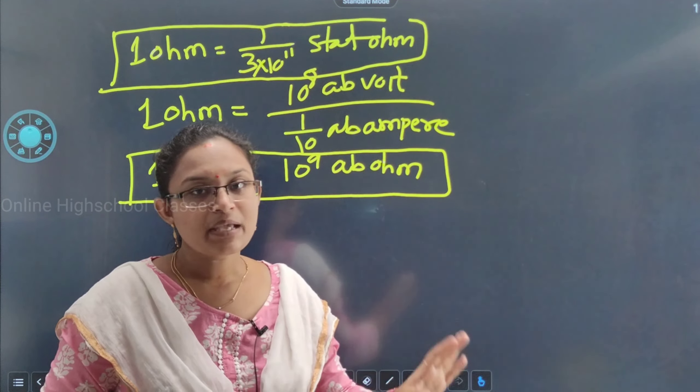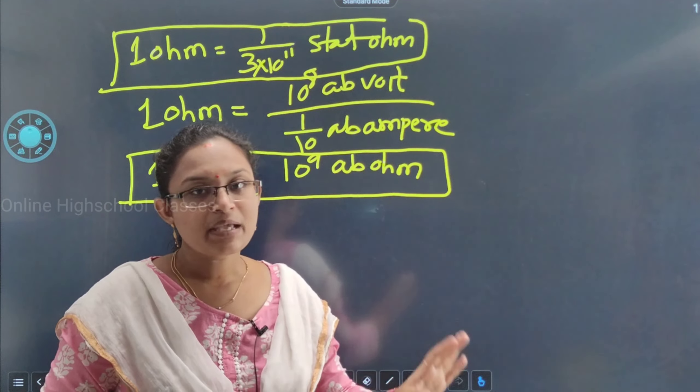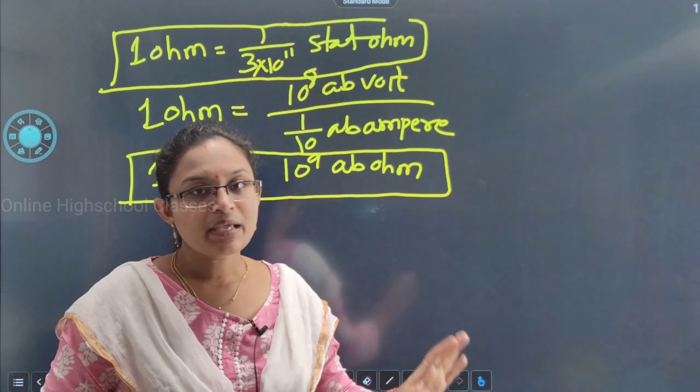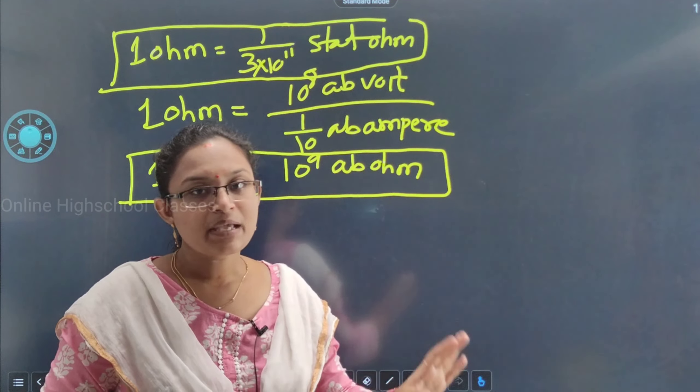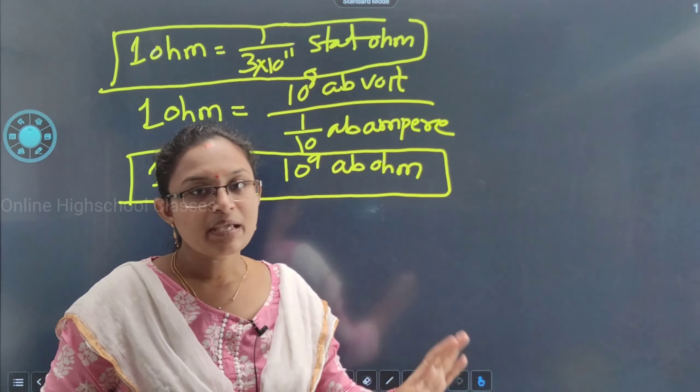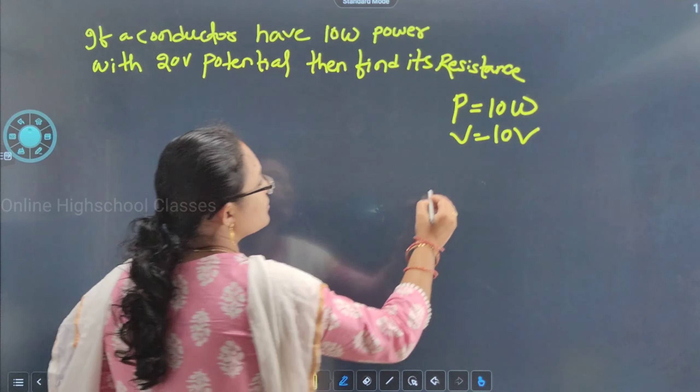Let's look at a sample problem. A conductor has 10 watt power and a potential of 20 volt. Find the resistance. So P = 10 W and V = 20 V; find R.